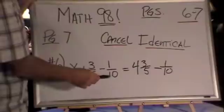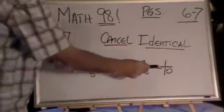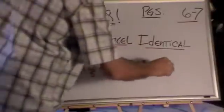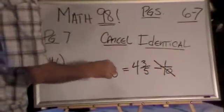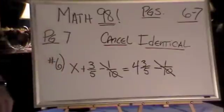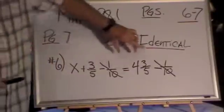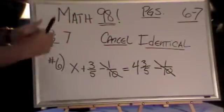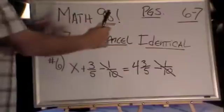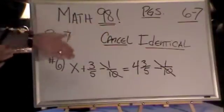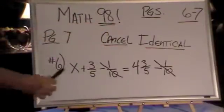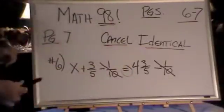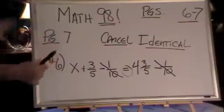Look here at this negative 1 tenth and a negative 1 tenth. Is it a little too obvious? Here's what you do. You say, identical sign, identical amount, bye-bye. You take the same thing away from each side of the equation, the equation is still equal. If you add the same thing, multiply the same thing, divide the same thing from the equation, as long as you do the same thing to each side of that equal sign, it is still an equality.